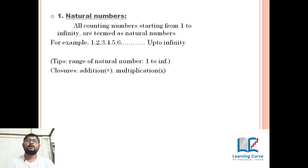Natural numbers: all counting numbers starting from 1 to infinity are termed as natural numbers. See, 1, 2, 3, 4, 5, 6, up to how much you can count. All countable numbers from 1 are natural numbers.